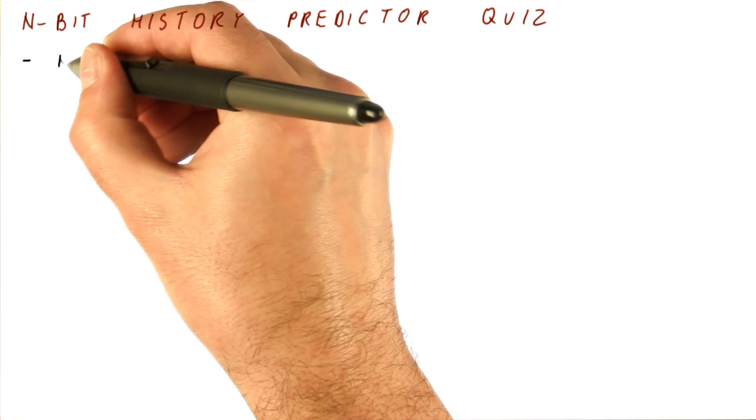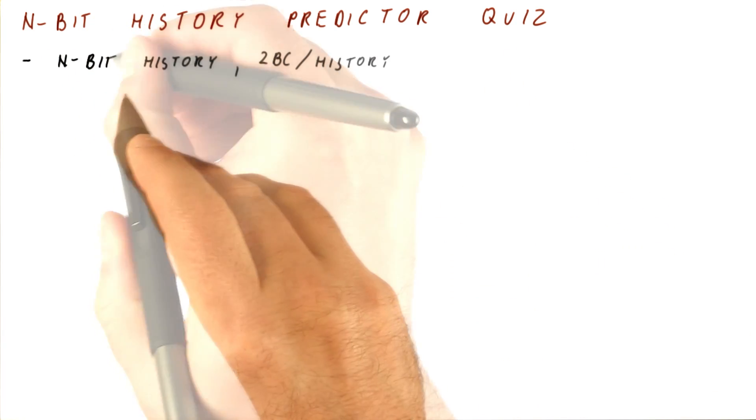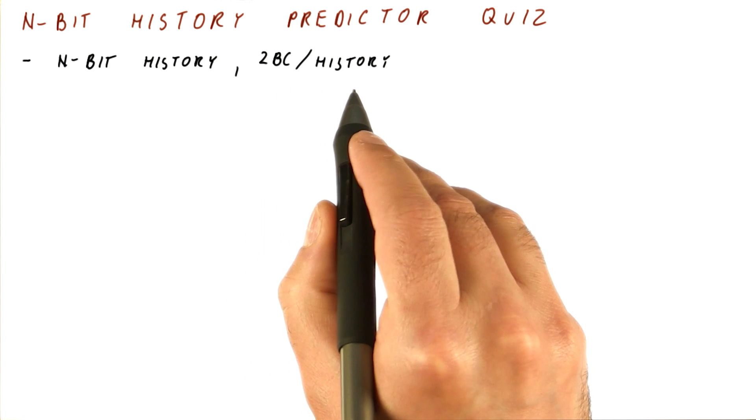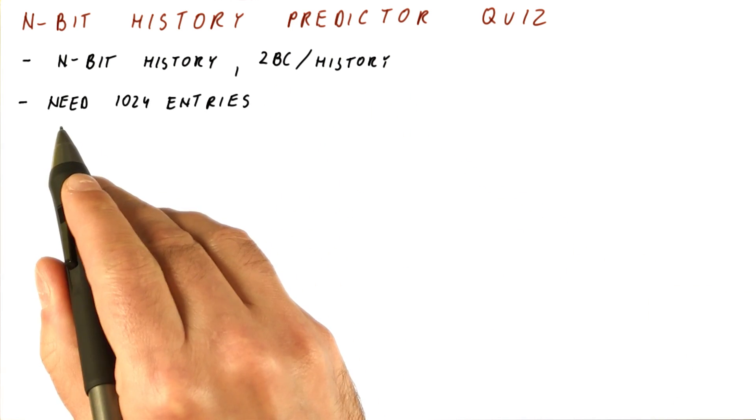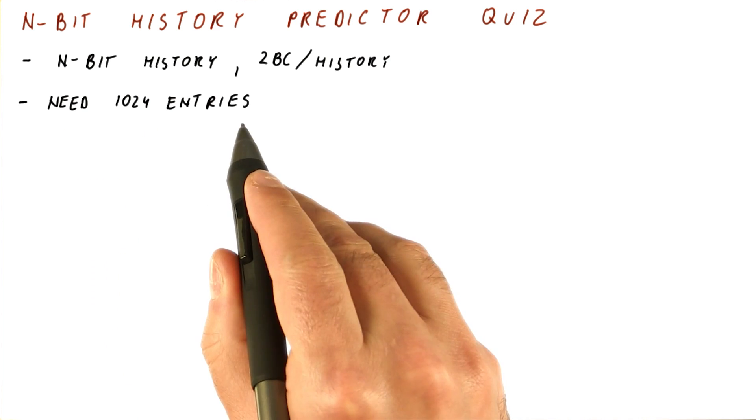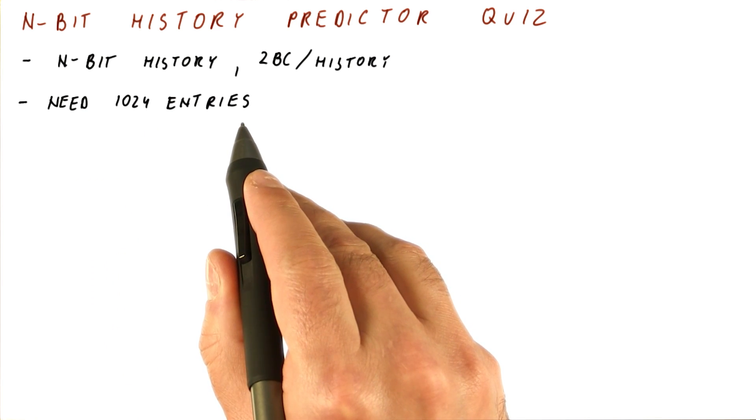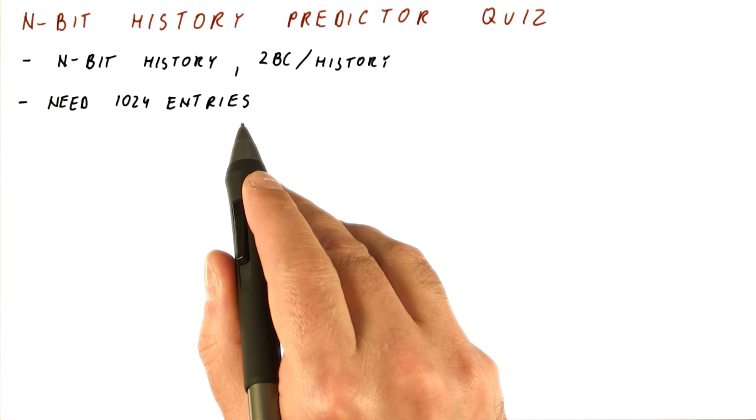Let's say we have an n-bit history with a two-bit counter per history in each predictor entry. We need 1,024 entries in order for each branch to have its own entry so that they don't interfere with each other.